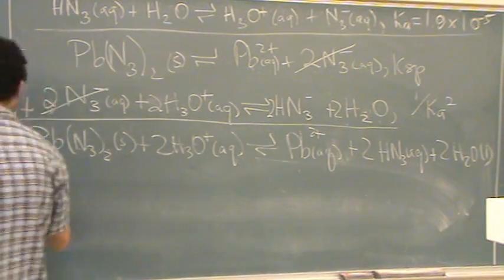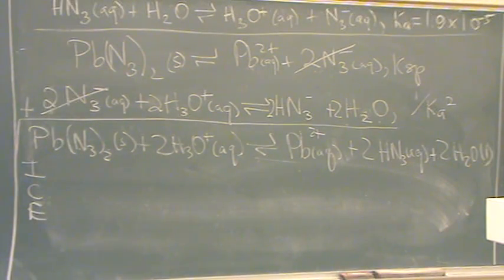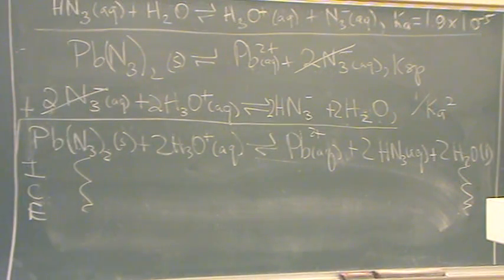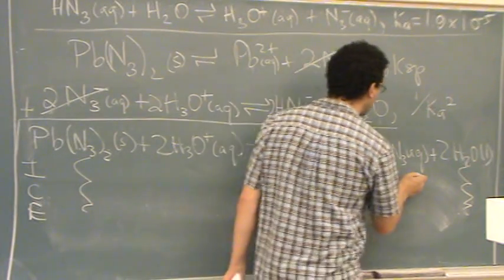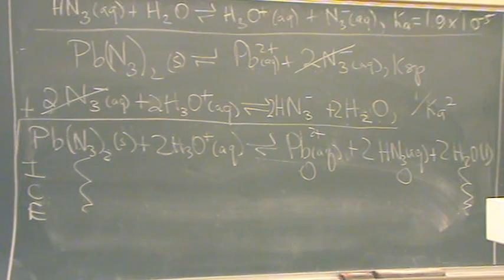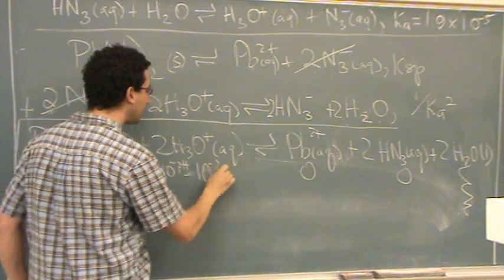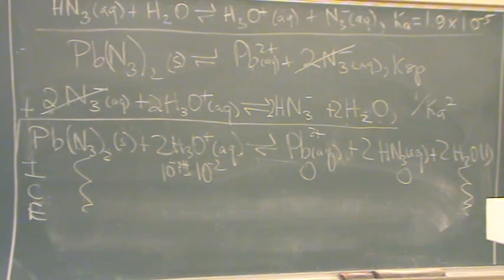Set up your ice table. Ignore solids, ignore liquids. You definitely don't start off with any of these. Nothing's given in the problem at all. You do have something for the H3O plus. Does anybody know what it is? I gave you in the question it's pH 2. Whenever you see pH you automatically know the H3O plus concentration because H3O plus concentration is 10 to the minus pH, or in this case 10 to the minus 2 because the pH is 2. So when you see pH think H3O plus and vice versa.